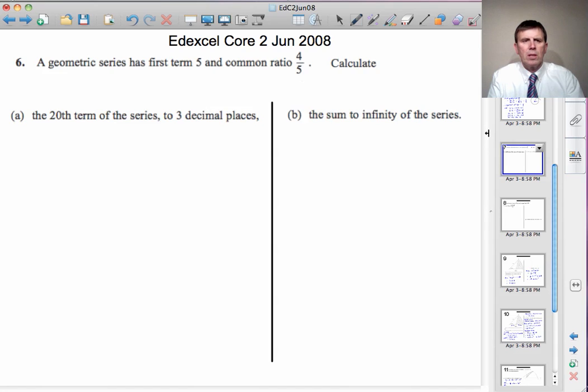Question 6. A geometric series has first term 5 and common ratio 4 fifths. So we can write down that A, the first term, is 5 and R, the common ratio, is 4 fifths or 0.8.